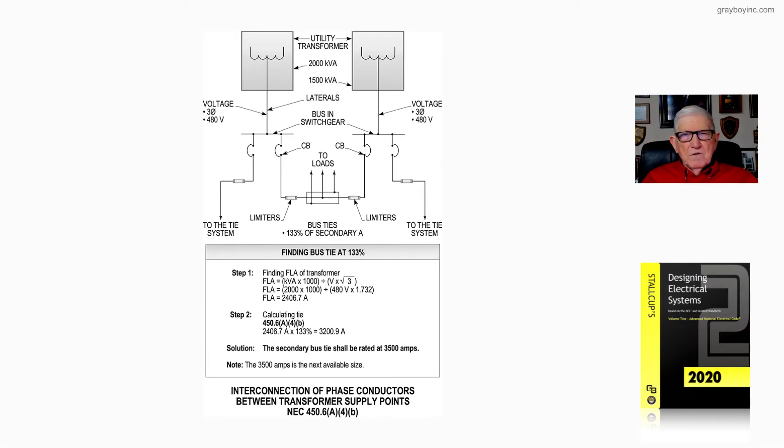Now this figure 20-17 covers the requirements of section 450.6(A)(4)(b). That actually deals with the interconnection of phase conductors between the transformer supply points, again in accordance with NEC 450.6(A)(4)(b). Now notice reviewing the illustration.